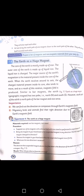Bismillahirrahmanirrahim wassalamu alaykum my friends. Today's topic is the Earth is a huge magnet. The core of the Earth is mostly made up of iron. The outer core of the Earth is made up of liquid iron. The liquid iron is charged. The major source of the Earth's magnetism is the material present inside the core of the Earth.